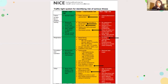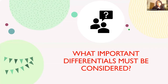NICE provides a helpful traffic light system for identifying serious illness in febrile children. Going through the history with parents: the child looks pale, is not responding normally to social cues, not playing, not smiling, not interested in eating — very miserable. She has a grunting noise when breathing, reduced wet nappies, fever for more than five days, and is not weight-bearing. She has multiple amber signs and a significant red flag.